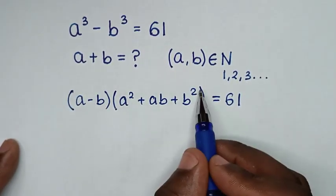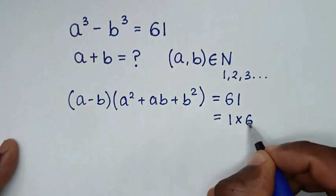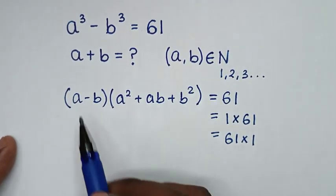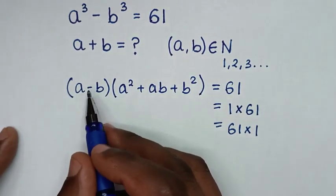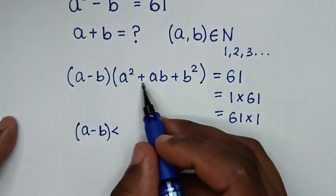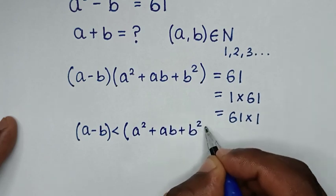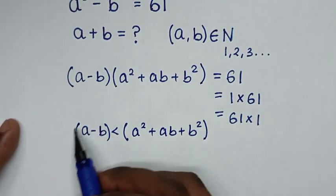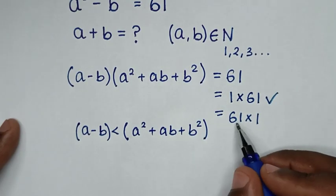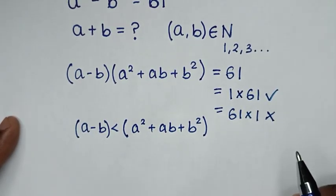We have a multiplication of two factors equal to 61. Now 61 is a prime number, so 61 is either 1 times 61 or 61 times 1. Between these choices, a minus b involves subtraction, so a minus b is less than a² plus ab plus b². This means a minus b cannot equal 61, since that would require the other factor to be 1, which contradicts the inequality. So we reject that choice.